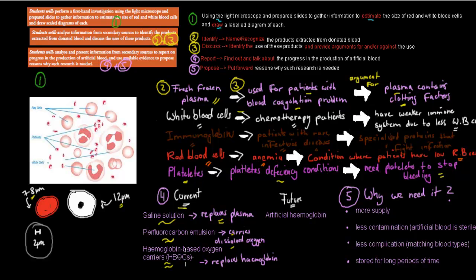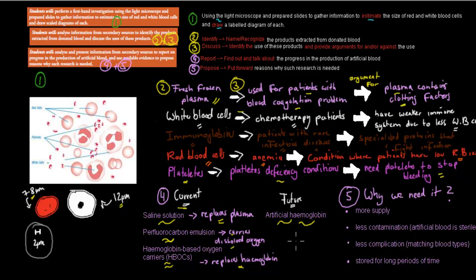We also have haemoglobin-based oxygen carriers, which are meant to replace haemoglobin, but again they're not as effective because they're not encased in their normal red blood cell. In the future, we're still working on artificial haemoglobin, which we're trying to make out of stem cells. This would allow us to make normal red blood cells with normal haemoglobin inside, which will be much more effective than what we have at the moment.